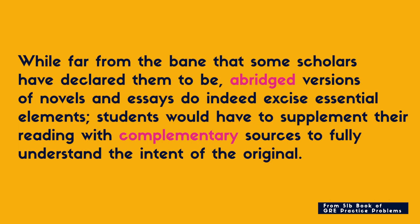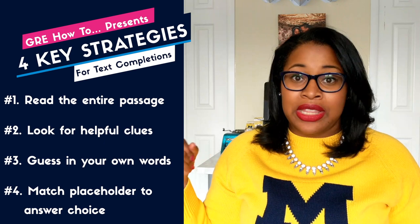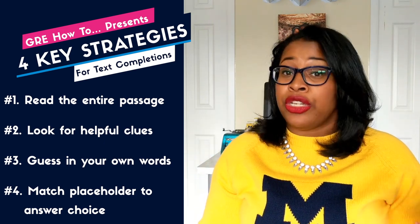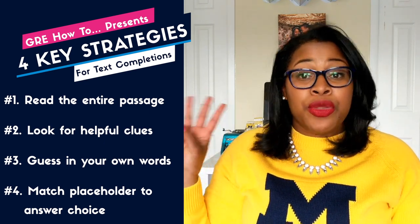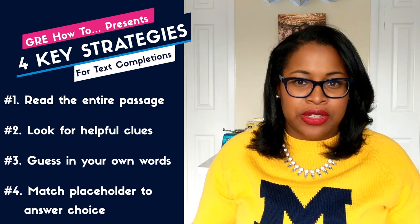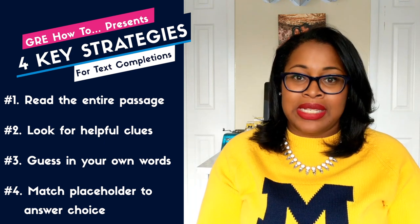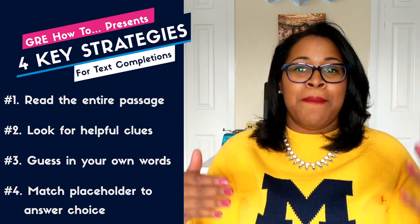Putting it together: 'While far from the bane that some scholars have declared them to be, abridged versions of novels and essays do indeed excise essential elements. Students would have to supplement their reading with complementary sources to fully understand the intent of the original.' So to recap, we've got four key strategies. First, read the sentence to understand the context. Second, look for clues around the blanks to understand the tone and the kind of words you're looking for. Three, create a placeholder in your own words so that you know what you're looking for. And then four, match your placeholder against the answer choices to see which answer best fits the sentence.